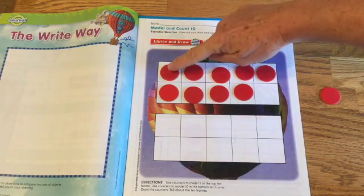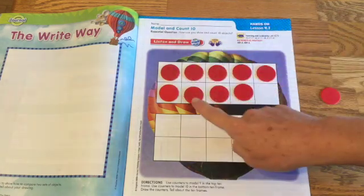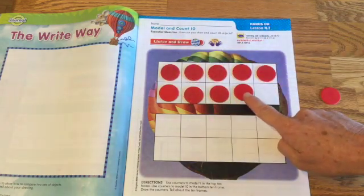And we learned that five and four more make nine. Let's count them to make sure. One, two, three, four, five, six, seven, eight, nine.